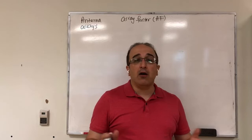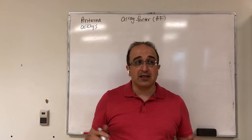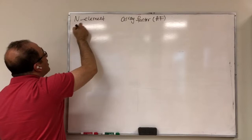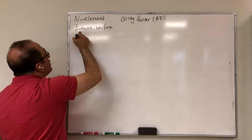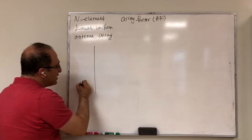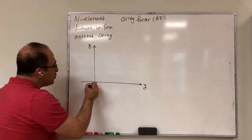In this lecture, we are going to generalize the topic from the previous lecture and go from two elements to N elements. We will study the linear uniform antenna array. Let's set up our coordinate system — say this is y, this is z — and assume the elements are placed along the z-axis.